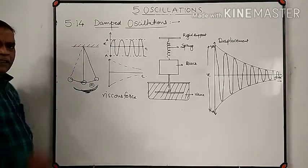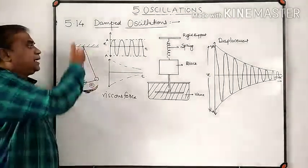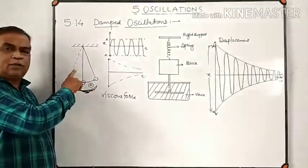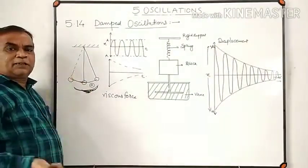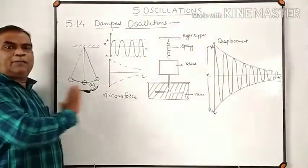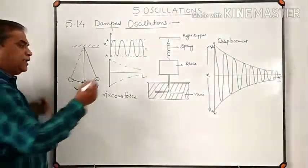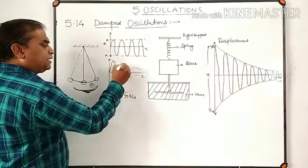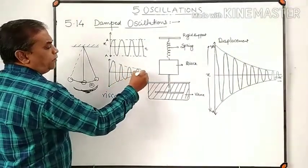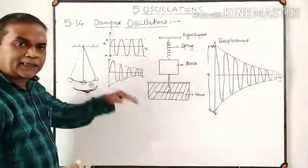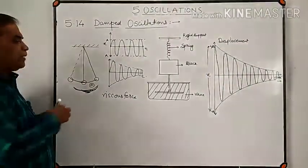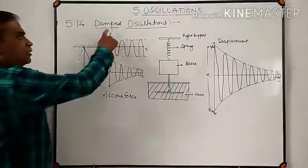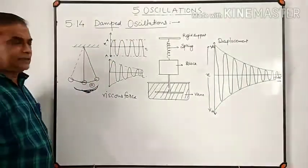These external forces help to reduce the amplitude of oscillation. The pendulum still undergoes periodic oscillation, but the amplitude decreases — we say the pendulum undergoes damped oscillation.